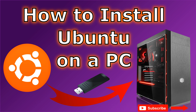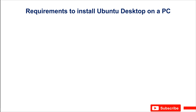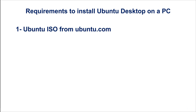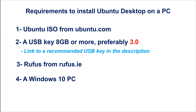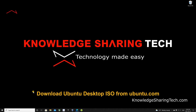The requirements to achieve this are: first, you need the Ubuntu ISO from ubuntu.com; second, you need a USB key that is 8 gigabytes or more; third, you need software to install the ISO file on the USB key — we are going to use Rufus; and of course you need a Windows 10 PC to prepare this USB key on.